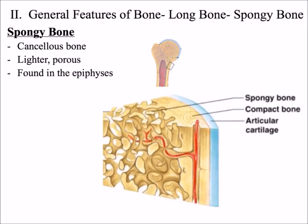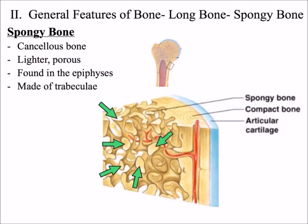Spongy bone is made up of structures called trabeculae, which are bony bars and plates. These individual structures here are the trabeculae.